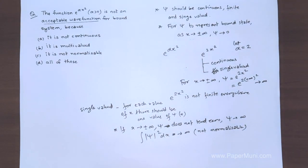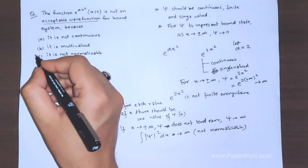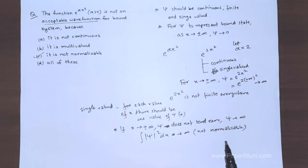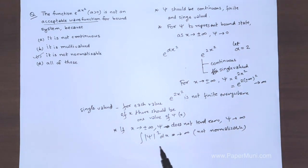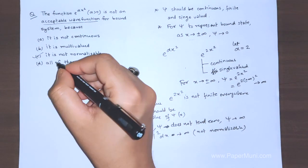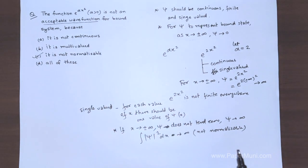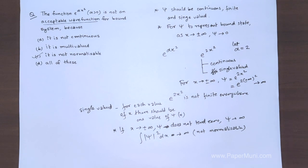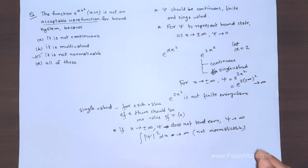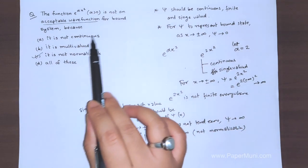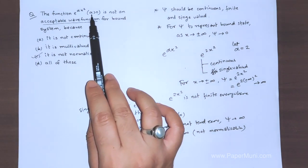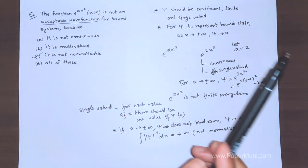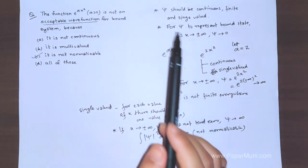So the correct answer is option C. It is not multi-valued — it is single-valued. The only correct option among those given is C. As a hint: had alpha been negative, it would have become an acceptable wave function — think about why.